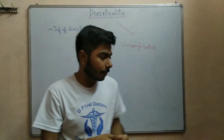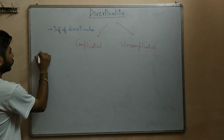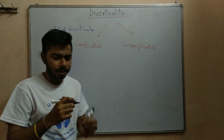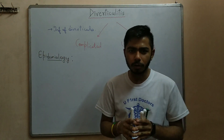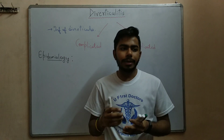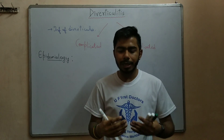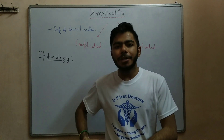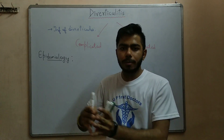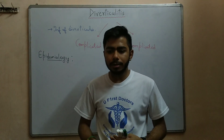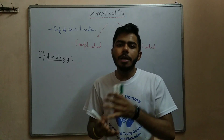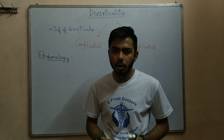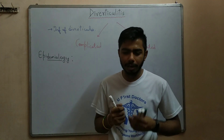Regarding epidemiology, it is quite similar to diverticulosis. In the North American population, left lower quadrant pain is seen in diverticulitis patients, corresponding to the sigmoid colon. In the Asian population, right-sided cecal diverticulitis is seen most commonly. The sigmoid colon is located in the left lower quadrant, hence the left lower quadrant pain in North Americans.